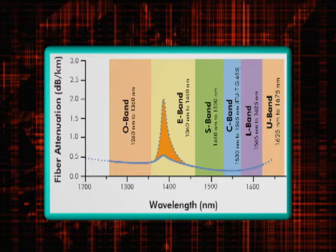The S-band, or short band, spans from 1460 to 1530 nanometers. The C-band, or conventional band, spans from 1530 to 1565 nanometers. The L-band, or long band, covers from 1565 to 1625 nanometers.